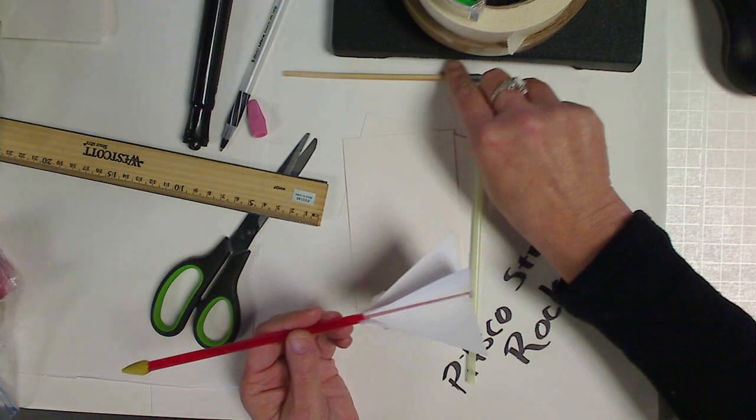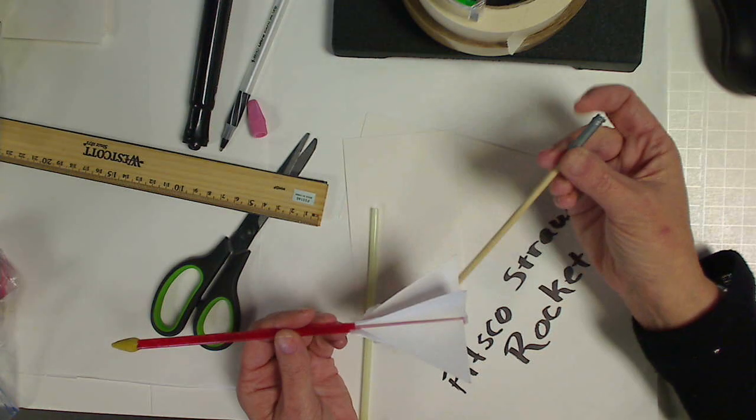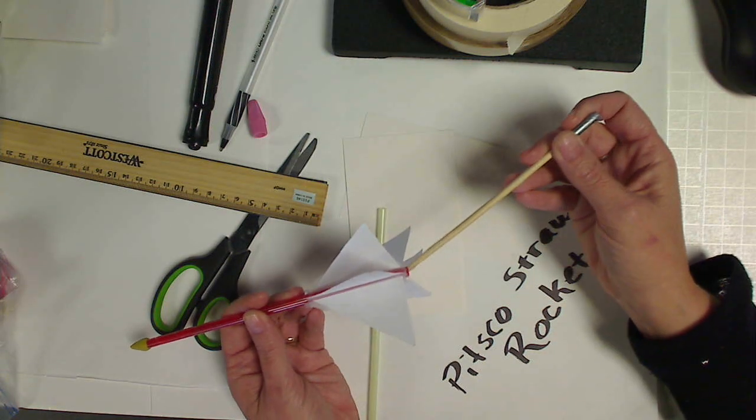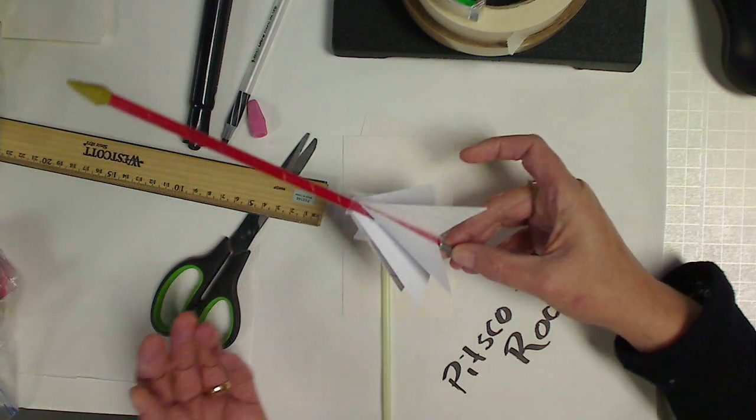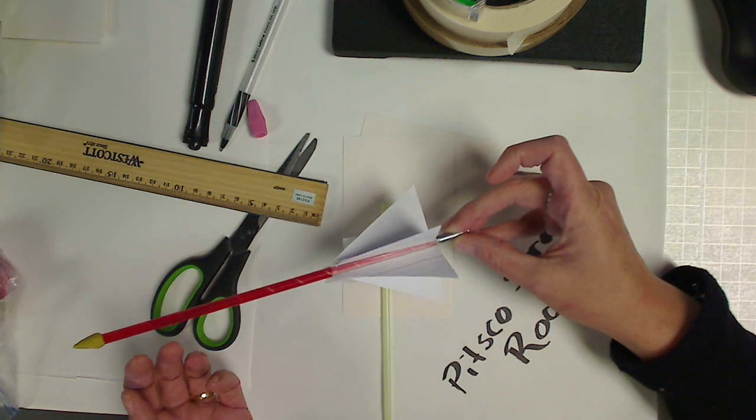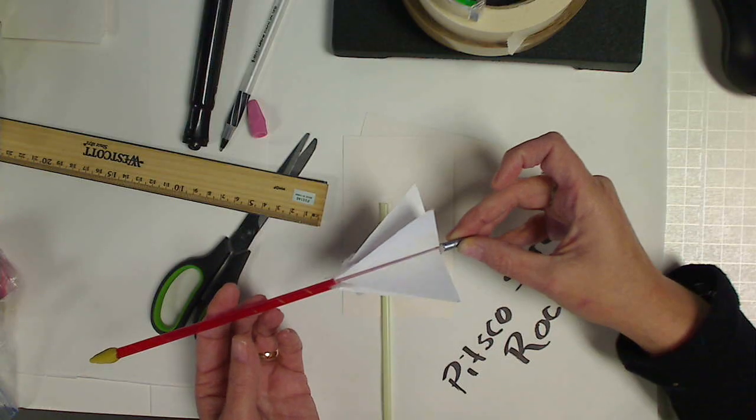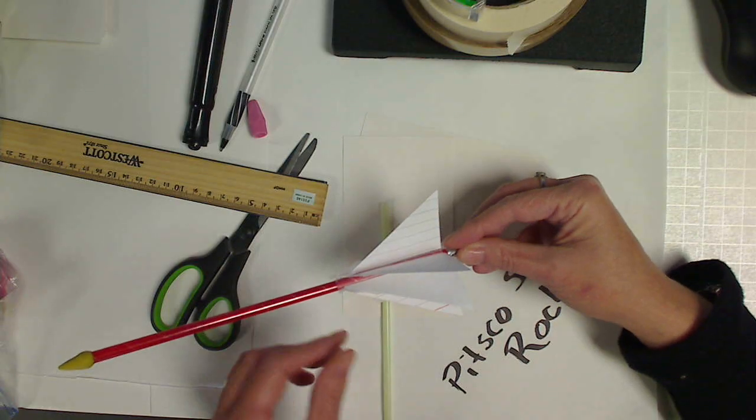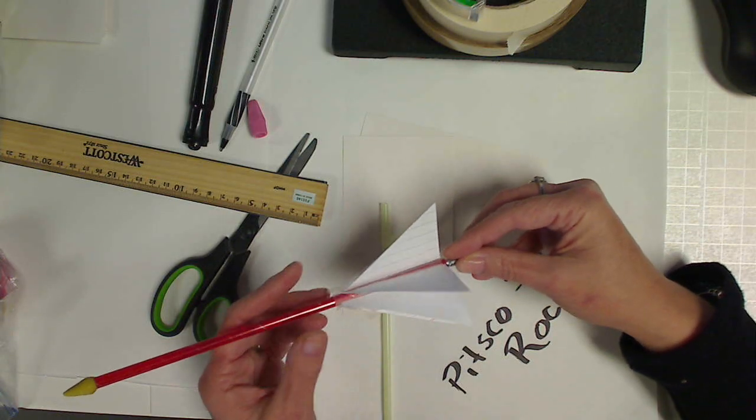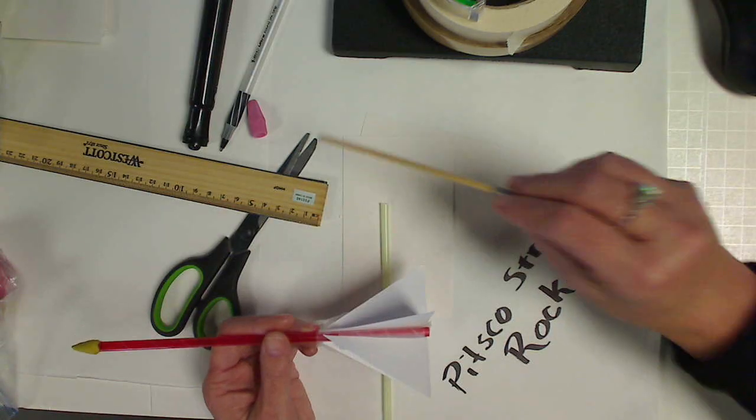I also took a bamboo skewer and put some duct tape at the bottom of it. So as I'm working on this, I can hold it like this in order to more effectively get my hands around it and put on the fins and that sort of thing. But you don't have to have this, but sometimes it makes it nice.